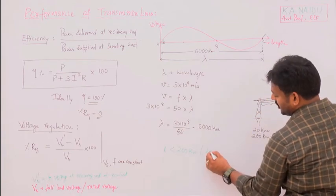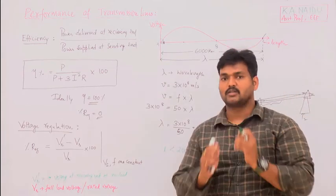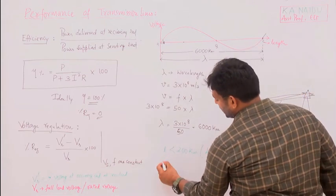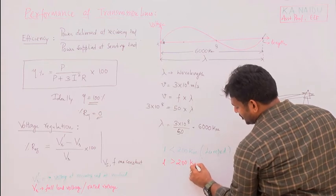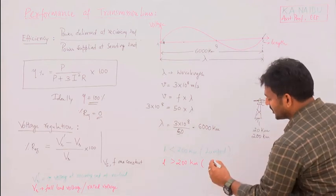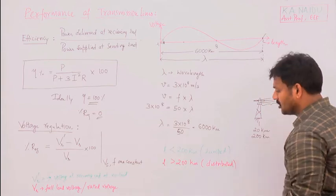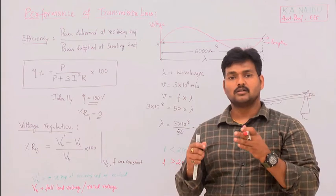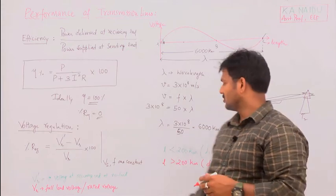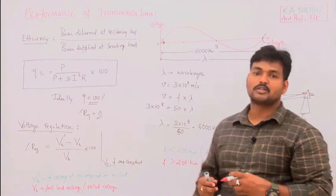When the length is greater than 200 kilometers, you have to analyze the performance of the transmission line assuming distributed parameters. That means inductance, capacitance, and resistance are distributed throughout the entire length of the line. These are the fundamentals required for analyzing the performance of a transmission line.